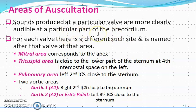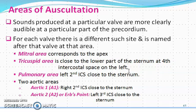The precordium is the area of the chest over which the heart lies. The sound produced by the mitral valve will be better audible at the mitral area, and the sound produced by the tricuspid valve will be clearly audible at the tricuspid area. The mitral area corresponds to the apex, and the tricuspid area is close to the sternum at the fourth intercostal space. I will discuss this in detail with a diagram in the next slide.